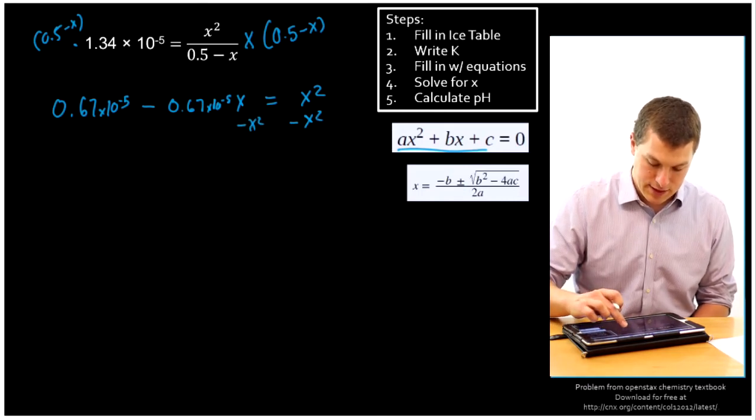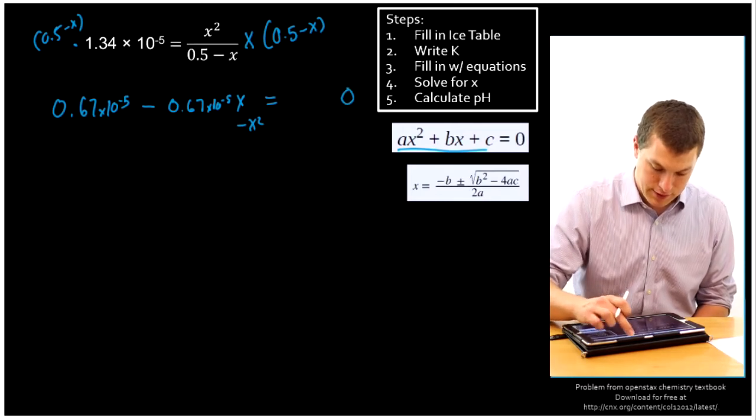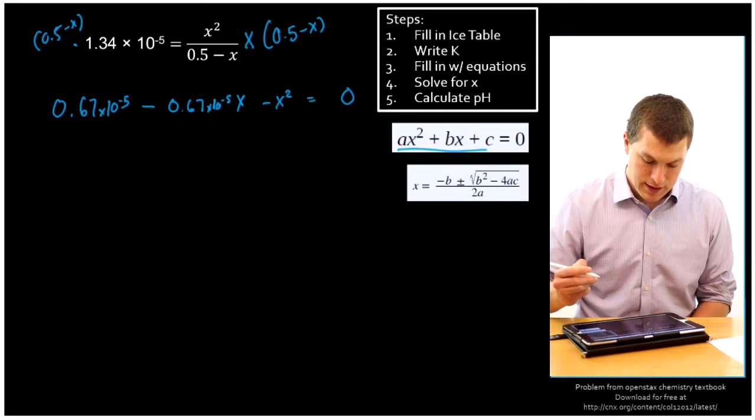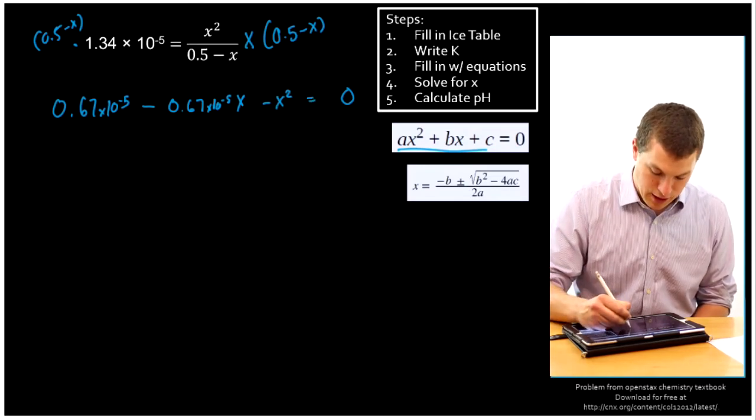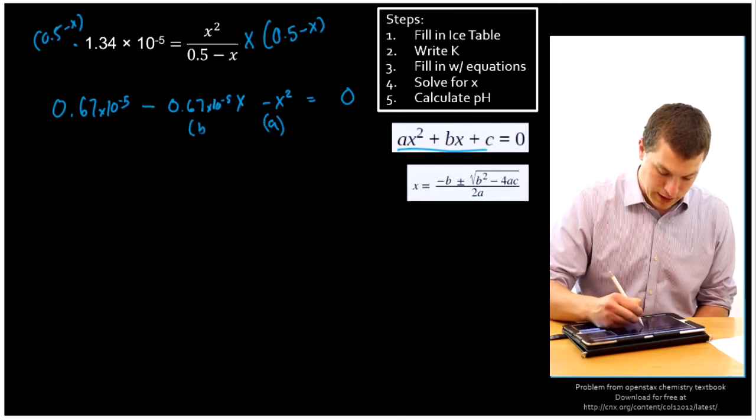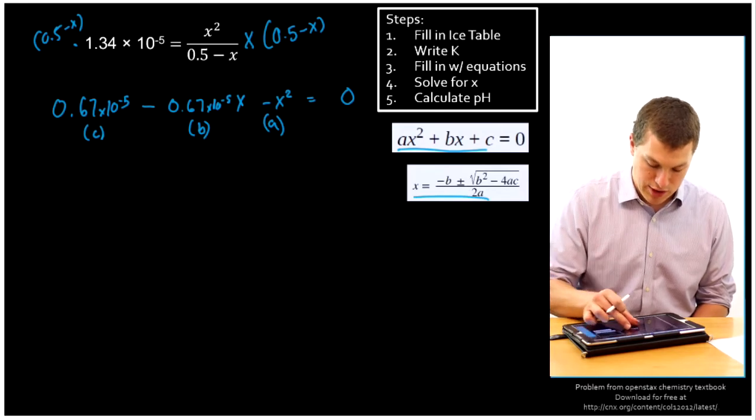And what that's going to give us then, is 0 on this side, and on this other side, we're just going to have a minus X squared term. Now this is going to be our value for the A constant, and this is going to be the value for B, and this is going to be the value for C. And we're just going to plug that in to our quadratic equation.